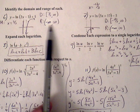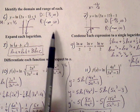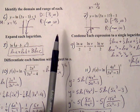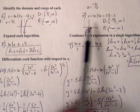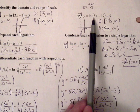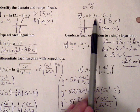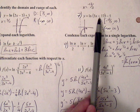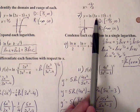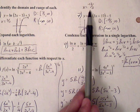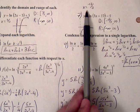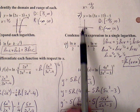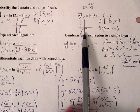The range for natural log functions, or any log functions, will always be all real numbers, negative to positive infinity. For number seven, with 3x plus 17, the graph shifts to the left, giving a vertical asymptote at negative 17 over 3.